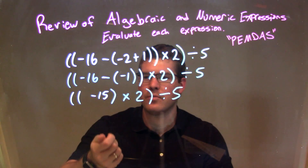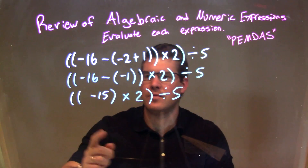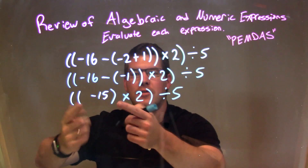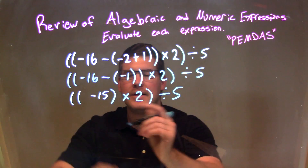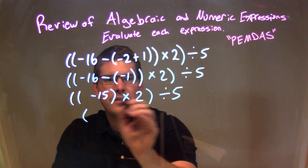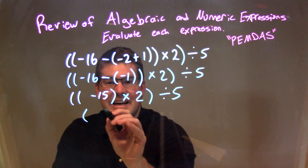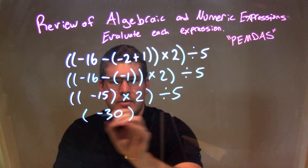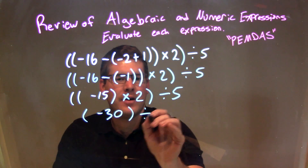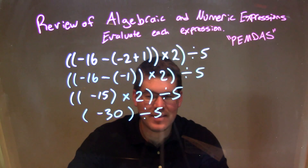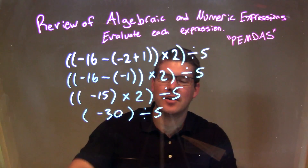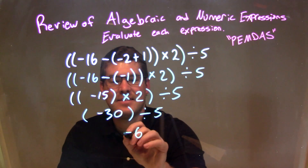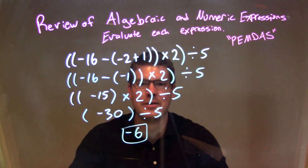Working from inside the parentheses, we have negative 15 times 2. Don't really worry about the outer parentheses anymore — there's nothing else inside it. Negative 15 times 2 is negative 30. That parentheses comes down, divided by 5. Now it's getting a little easier to see. Negative 30 divided by 5 is negative 6. Our final answer is just negative 6.